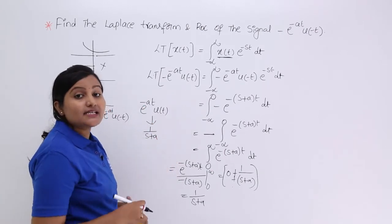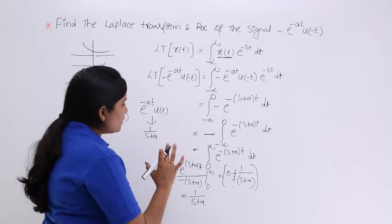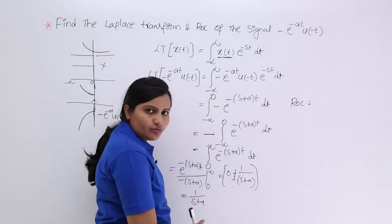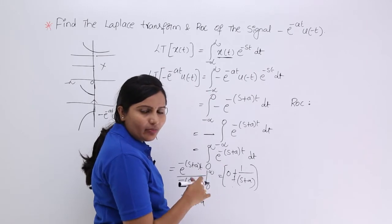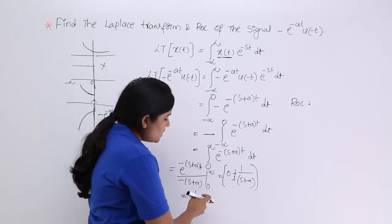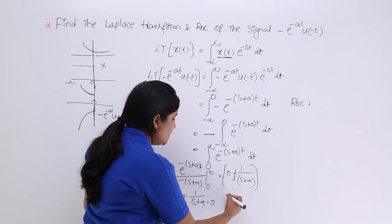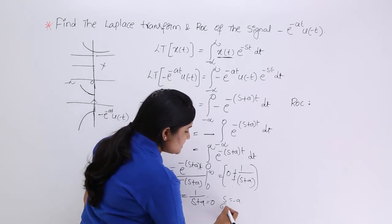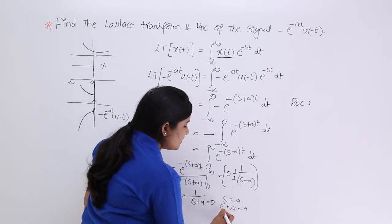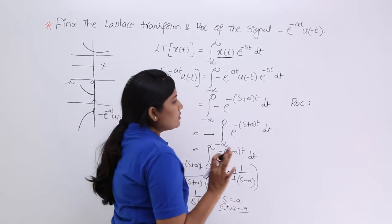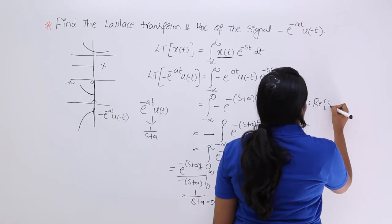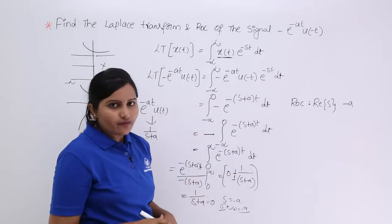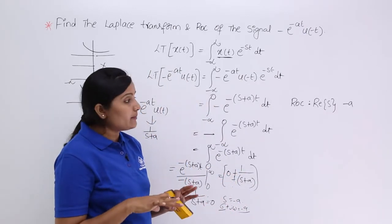The ROC can be defined from the denominator: equating s plus a equal to zero gives the pole at s equals minus a. Since s equals sigma plus j omega, the real part equals minus a. So the real part of s equals minus a is our reference pole location.